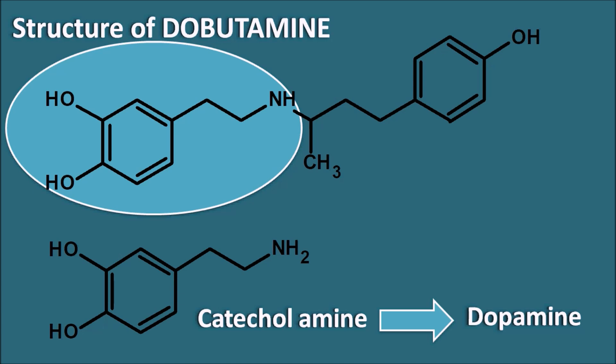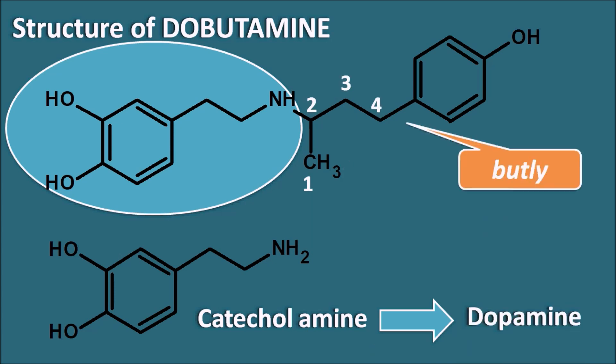What are the structural modifications compared with dopamine? We can observe that an alkyl chain is present on the nitrogen of the amine group in Dobutamine. Counting the number of carbons — 1, 2, 3, and 4 — it is having a butyl side chain. That's why the name Dobutamine contains the letters B-U-T, indicating a butyl side chain attached to the amine.